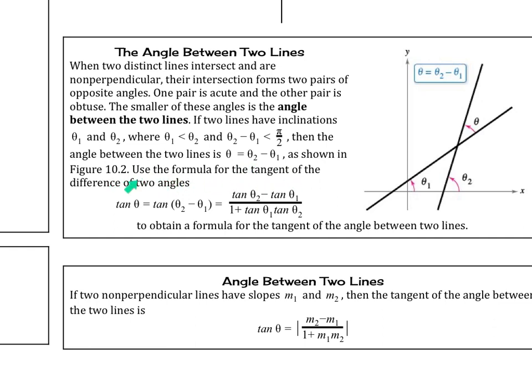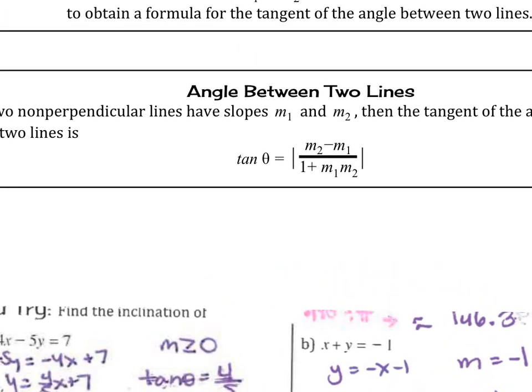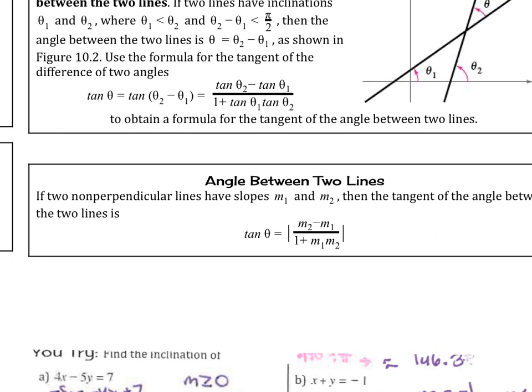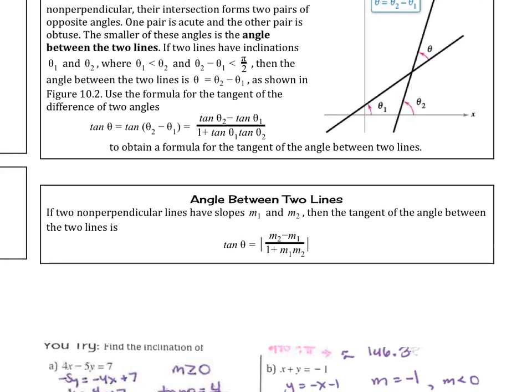We use a formula for the tangent of the difference of the two lines. What we're really going to use is the slopes. If two lines have slopes m1 and m2, then the tangent of the angle between the two lines is: tangent of theta equals the slope of the second minus the slope of the first, divided by 1 plus m1 times m2. That's the formula we'll use.